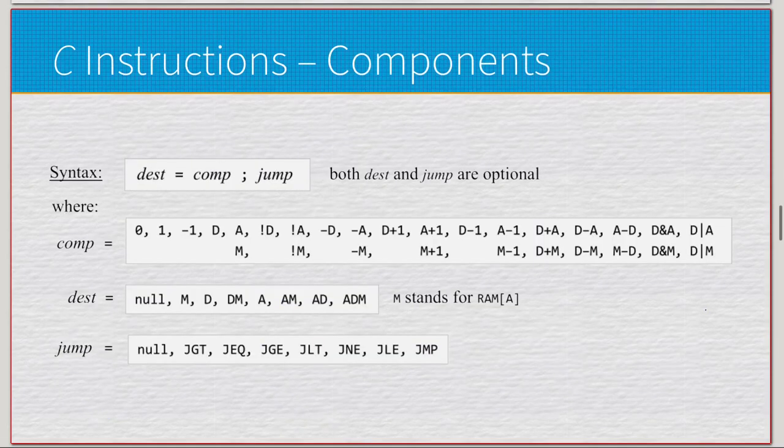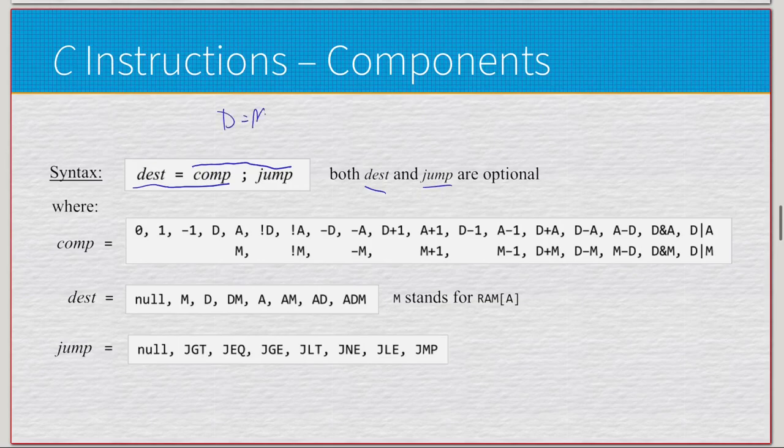And this is kind of everything the C instructions can do. Now, right off the bat, the syntax is very important here. We have dest equals comp semicolon jump, with both dest and jump being optional. And the reason that is, is because we either have the form of destination equals computation, or computation semicolon jump. So, we've seen these formats before. So, dest equals comp would be something like D equals M, with M being the computation, D being the destination.